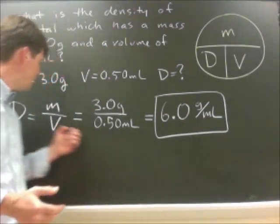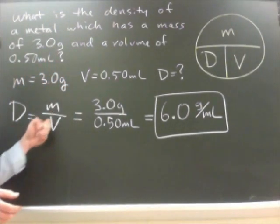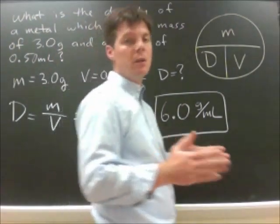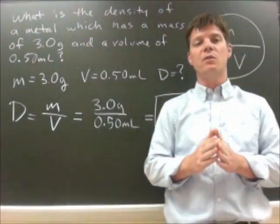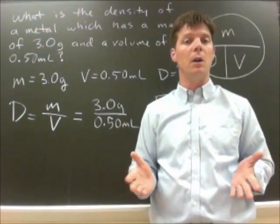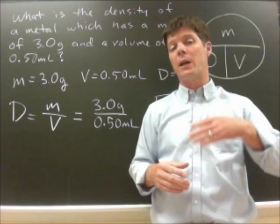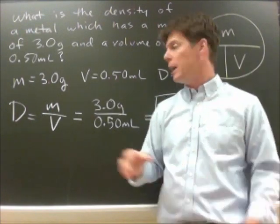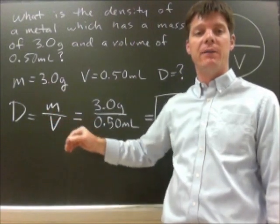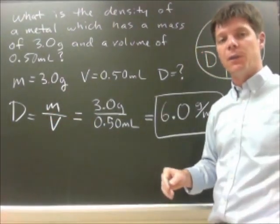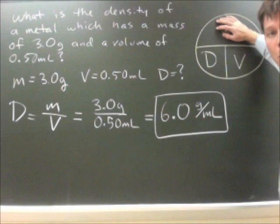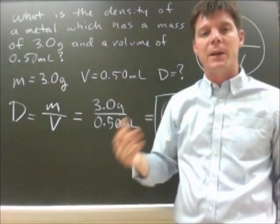My second step was to identify the equation that I would use to solve this question: density is equal to mass divided by volume. Please note that the equation should be written solved in terms of your unknown variable. If we were given a different problem to try to find the mass, in step two I would not write D equals m divided by V. I would need to write the equation for finding mass, which would be mass is equal to density times volume. So my second step is to identify the correct equation.